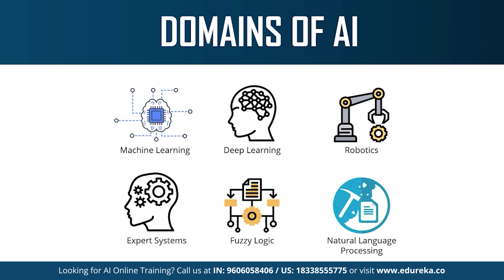Deep learning is the process of implementing neural networks on high-dimensional data to gain insights and form solutions. It is the logic behind Facebook's face verification algorithm, self-driving cars, and virtual assistants like Siri and Alexa. Natural language processing refers to the science of drawing insights from natural human language to communicate with machines and grow businesses. Twitter uses NLP to filter out terroristic language in tweets, and Amazon uses NLP to understand customer reviews and improve user experience.